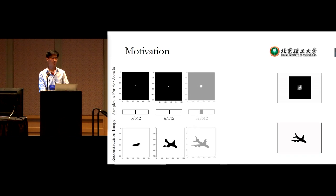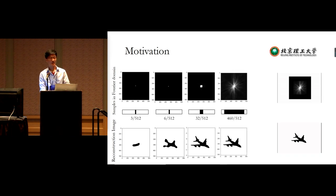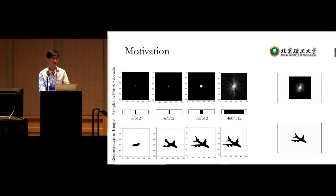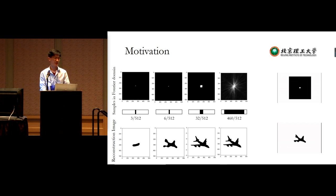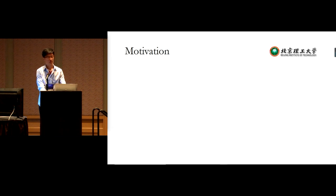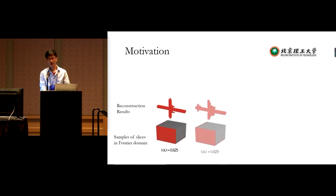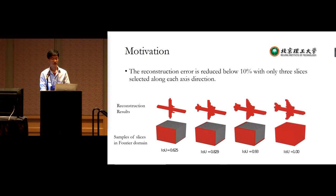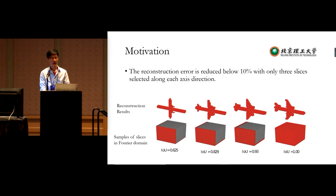Analyzing binary images in frequency space: low-frequency information maintains global shape, high-frequency captures local details. A binary image can be reconstructed well with just a few low-frequency components. These attributes extend to 3D shapes. Using one to three slices along each axis direction, reconstruction accuracy reaches 19% with only three slices per axis, motivating reconstruction in the frequency domain.